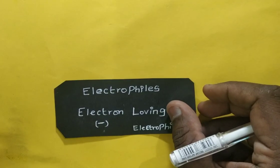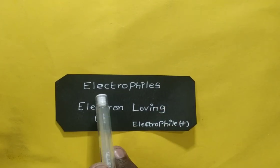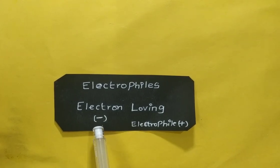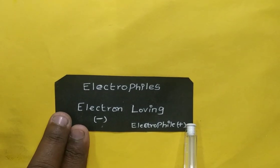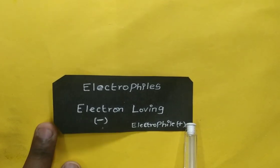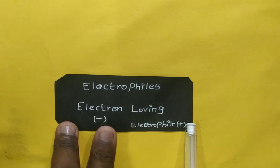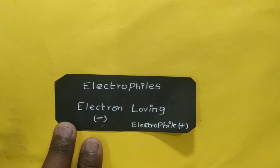The second one is electrophile. Electrophile means electron-loving. Electrons always have a negative charge, so the electrophile should have a positive charge. That is the key distinction: electrophiles carry a positive charge because they are attracted to electrons.